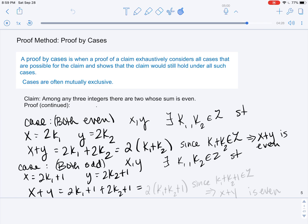And then we can see, we can factor out a 2, so we're going to be left with 2 times (K1 plus K2 plus 1). And once again, we observe that K1 plus K2 plus 1 is an integer, since the integers are closed under addition. And since we have expressed X plus Y as the product of 2 and an integer, X plus Y is even. Thank you.